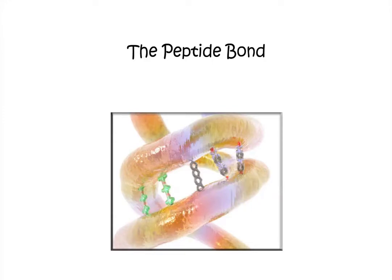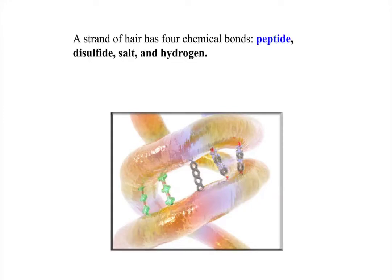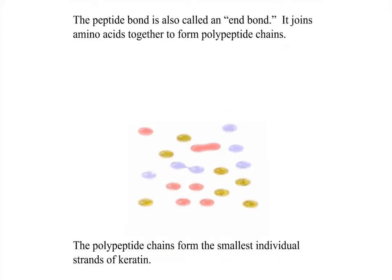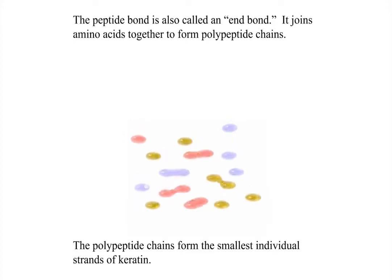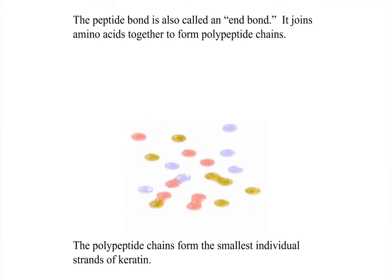Welcome to chemical hair bonds: the peptide bond. A strand of hair has four chemical bonds — peptide, disulfide, salt, and hydrogen. The peptide bond is also called an end bond. It joins amino acids together to form polypeptide chains.